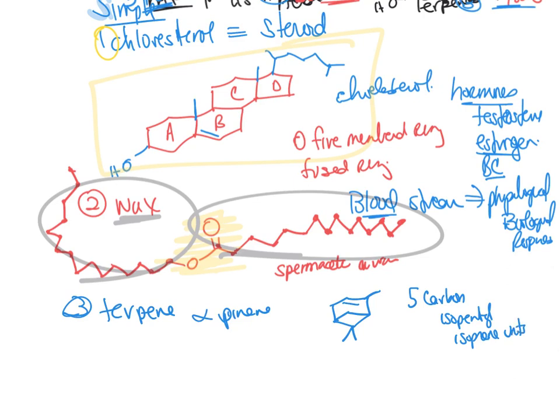So terpenes are composed of five-carbon isopentyl or called isoprene units. These are natural products. You can have like caraway seed, carvone. This is the pine, so it smells like pine sap. They're isolated from essential oils of plants and they come from the isoprene unit. So if you count this, ten carbons. So for it to be a terpene, it needs to be a multiple of five.